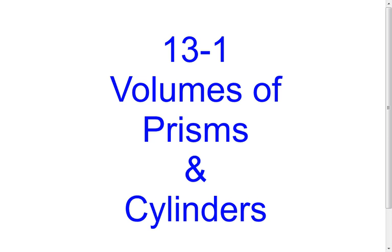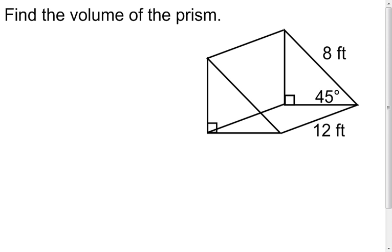Here, I'm going to look at four examples dealing with volumes of prisms and of cylinders. In this first one, notice we have a triangular prism. It's important to identify what type of prism it is, because that's going to tell you what the base is. Our formula to calculate the volume of a prism is volume equals area of the base times the height.